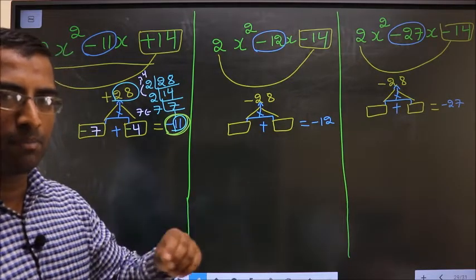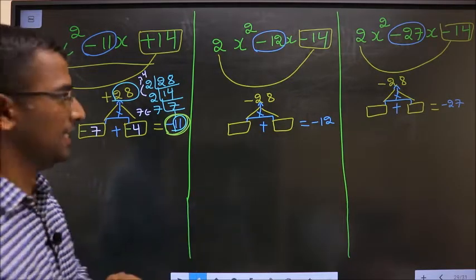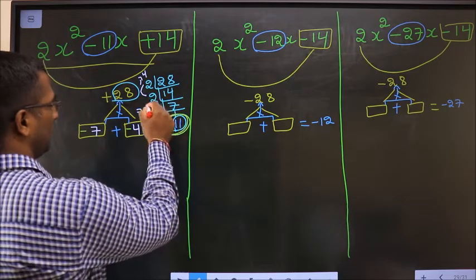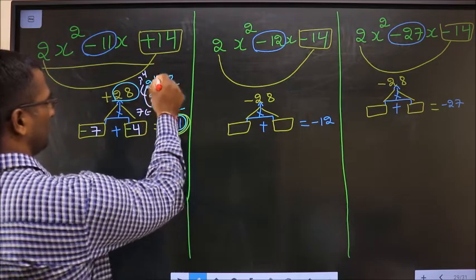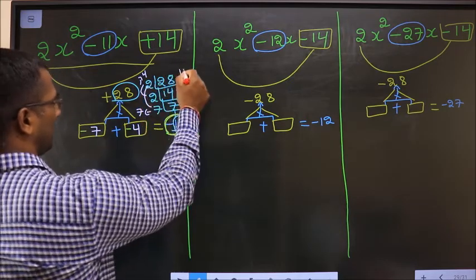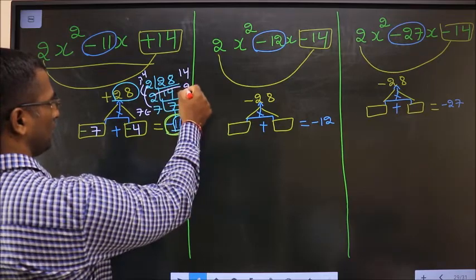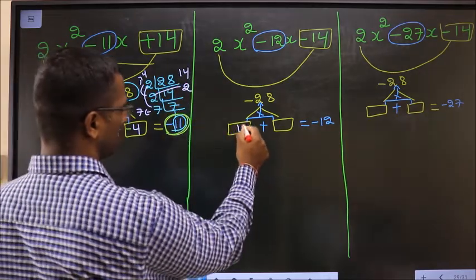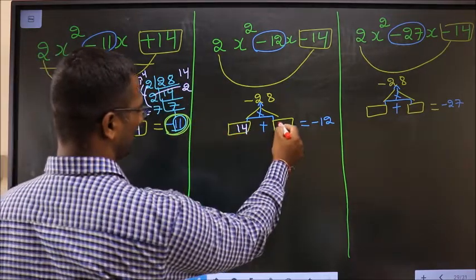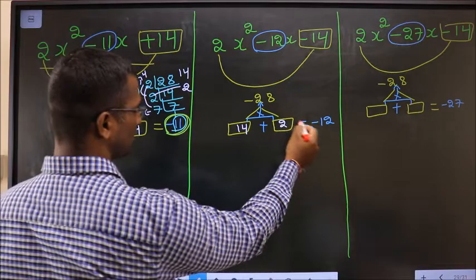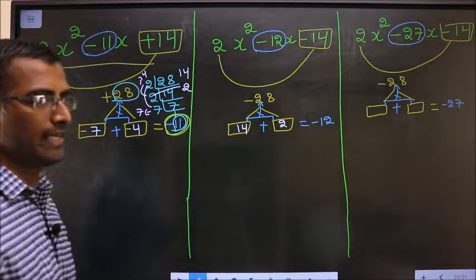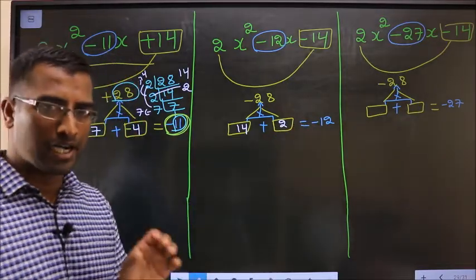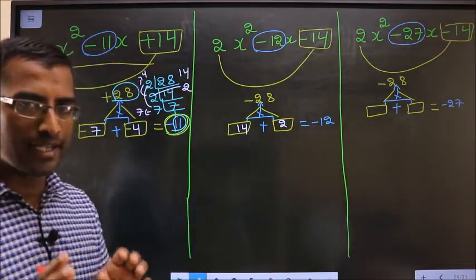For the second expression, the two numbers should be 14 and 2, since 14 - 2 = 12 and 14 × 2 = 28. Now adjust the signs accordingly.